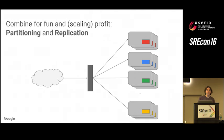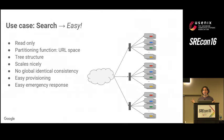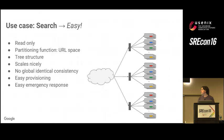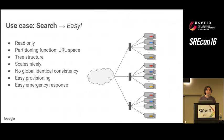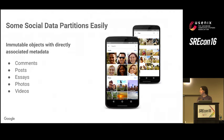How does this apply to a traditional distributed system? Take search. For search, the use case is actually easy because you have a large read-only data set. The partitioning function is very straightforward — you can partition by URL or by hash. It has a tree structure which scales nicely both in data set size and compute. You don't need global identical consistency; you can have multiple copies of the index spread around the world and search them independently. If they're not all in sync, that's not a big deal. Provisioning is easy — you add more copies. And a lot of social data sets actually partition really nicely, like posts or comments.